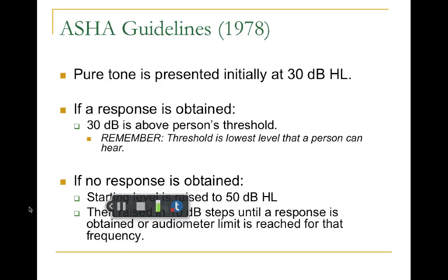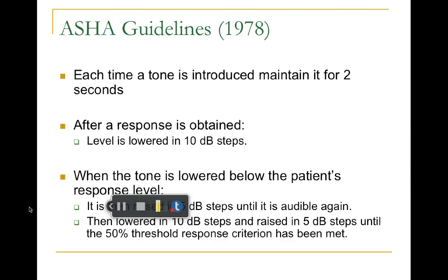Picking up where we left off: at 1000 Hz, a pure tone is put in at 30 decibels. If the person doesn't hear 30 decibels, you automatically hop up to 50 decibels. If there's still no response at 50 decibels, you go up in 10 dB steps until you get a response or reach the limit of the audiometer. Every time you send a tone in, you should count to one, two, even three, to give them the opportunity to recognize that a tone is being sent in. As soon as you get a response — let's say at 30 decibels at 1000 Hz —